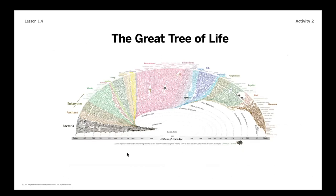The tree of life shows how every single species evolved from a single-celled organism millions of years ago. You can see there are branches and branches — if you look closely you might notice familiar ones like birds and reptiles. This is a very complicated tree showing all possible organisms and branches, which is pretty amazing.